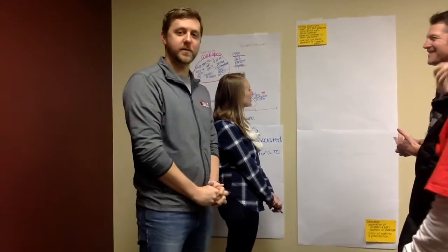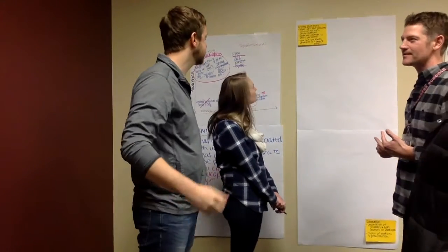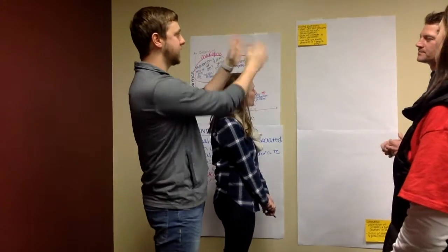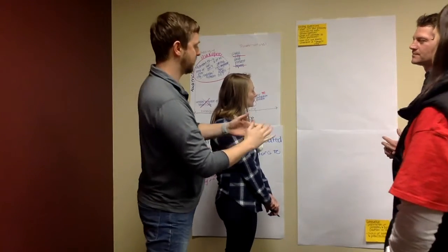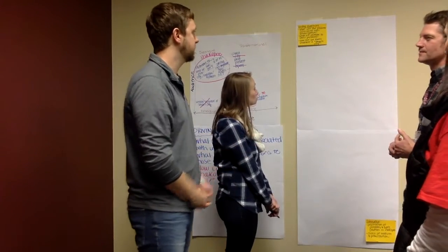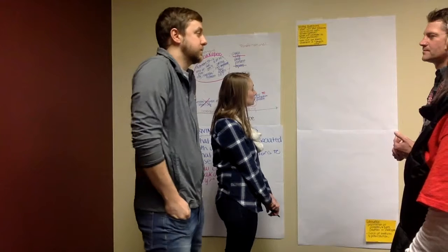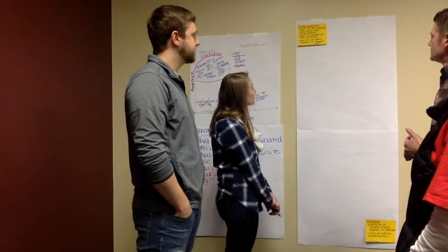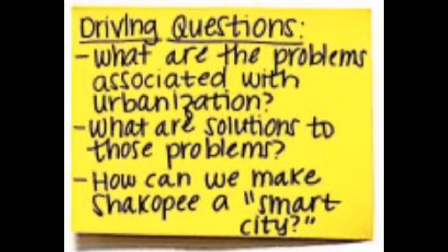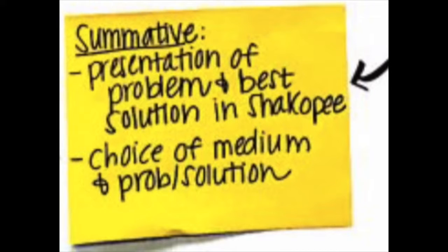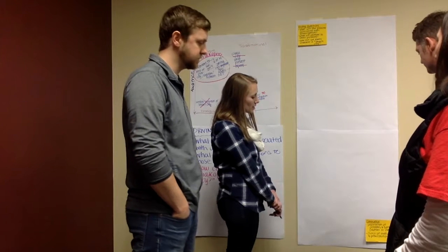We're going to be mapping this thing out now. This is maybe just how my brain works, but I like to get an idea of what the first step is going to be and then go to the last step and kind of fill in the middle — backwards design. Reminding ourselves from last time, we've got our driving questions: the problems associated with urbanization, solutions to those problems, making Shakopee a smart city, and eventually they're going to get to a summative where they're presenting that information in some way of their choosing.